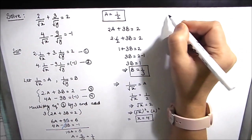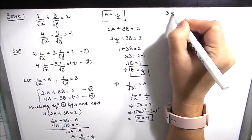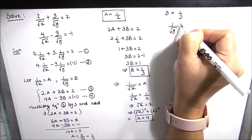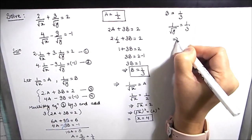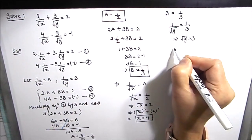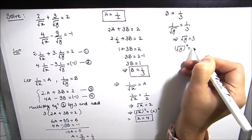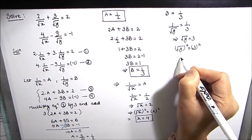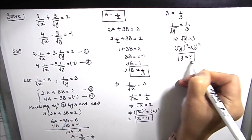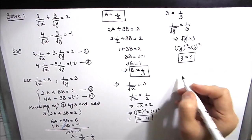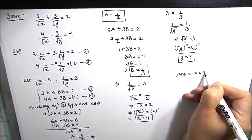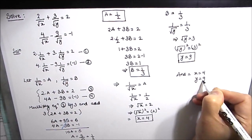Similarly, B equals 1/3 and B also equals 1 over root y, which gives us root y equals 3. Squaring both sides gives y equals 9. So we got the value of x and y as 4 and 9. Our final answer is x equals 4 and y equals 9.